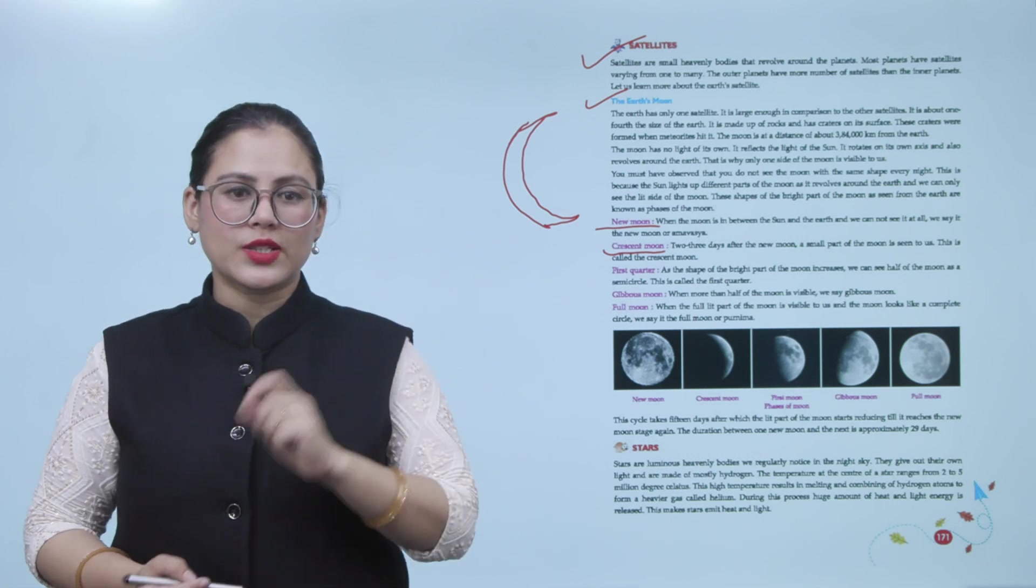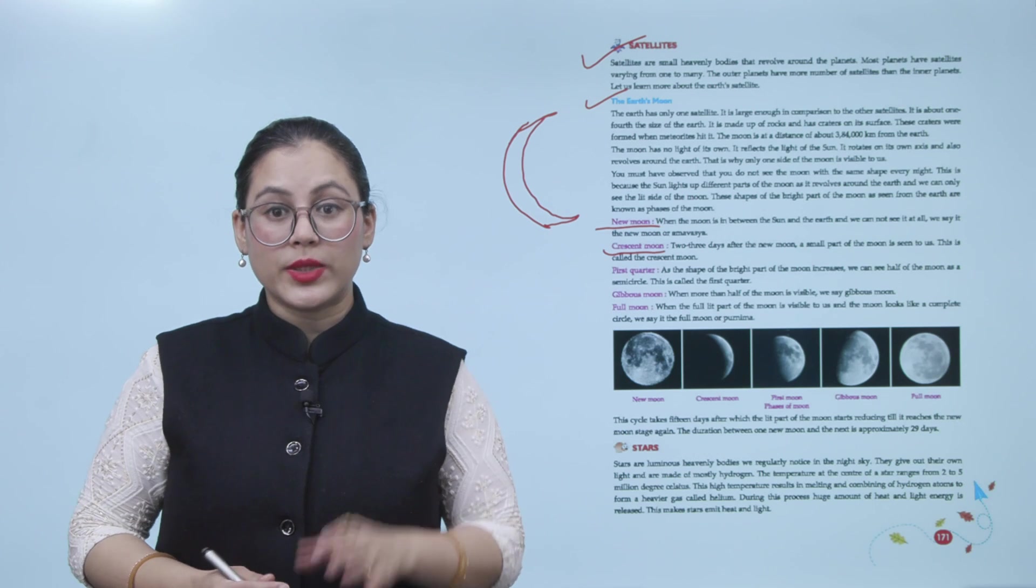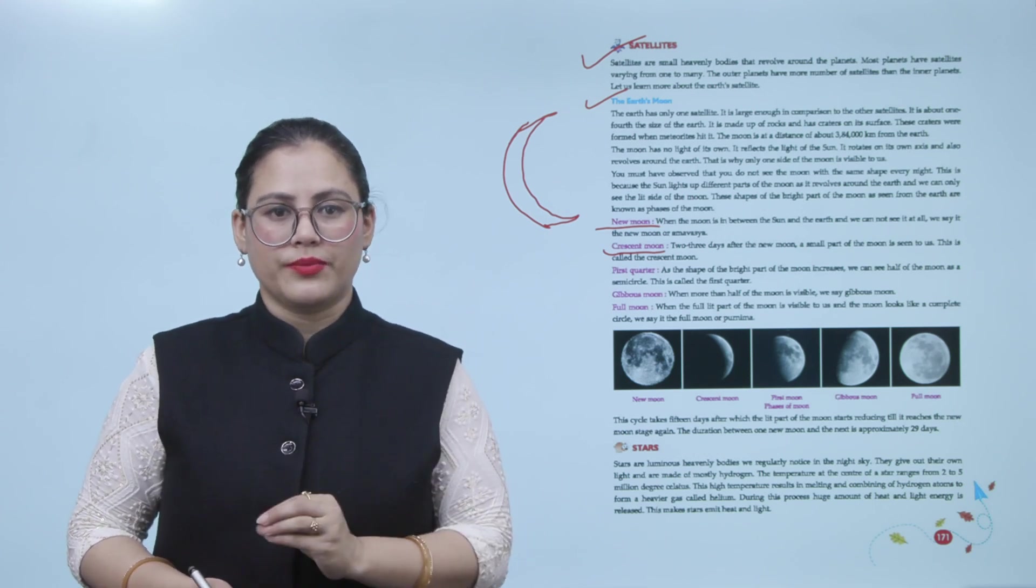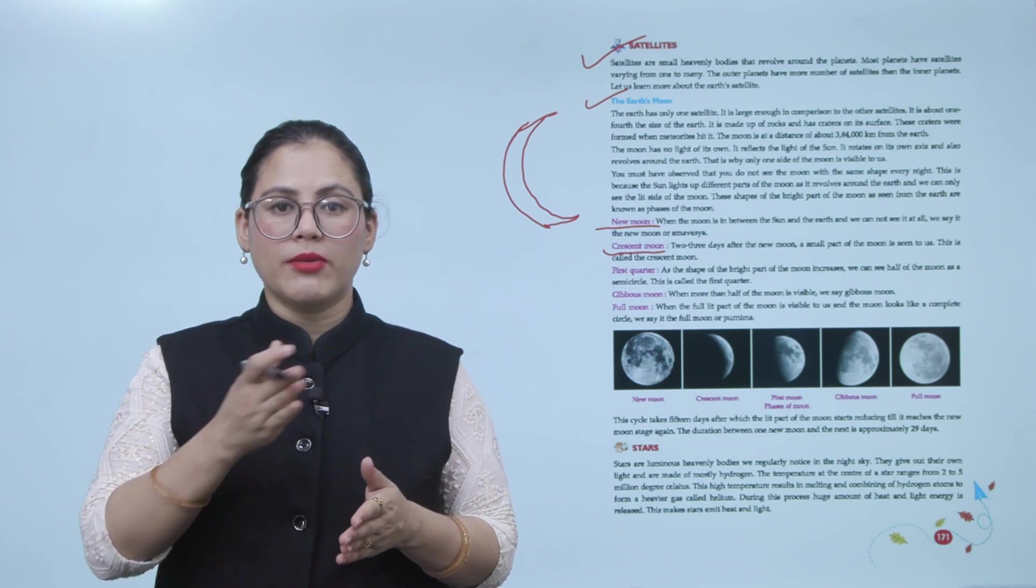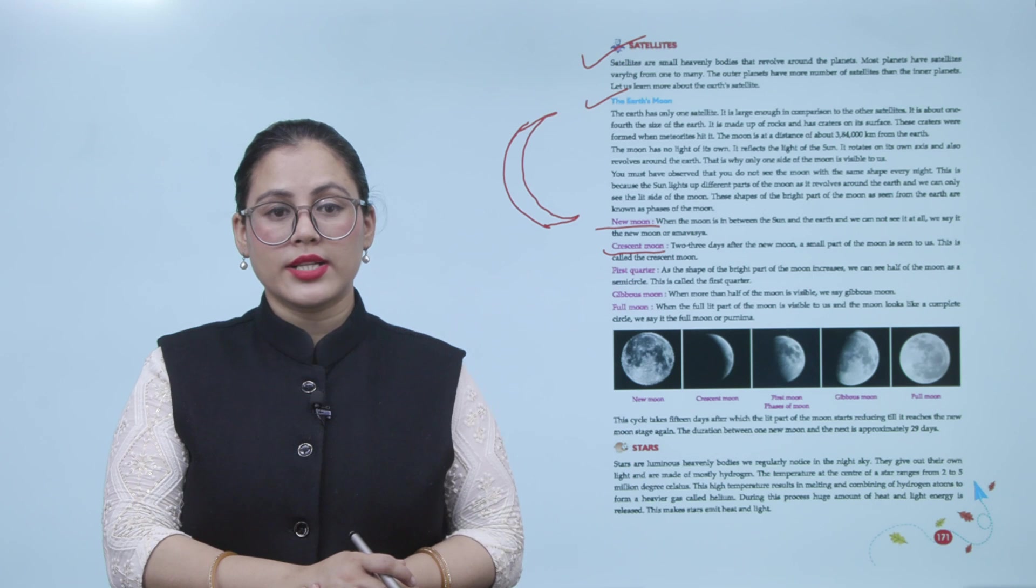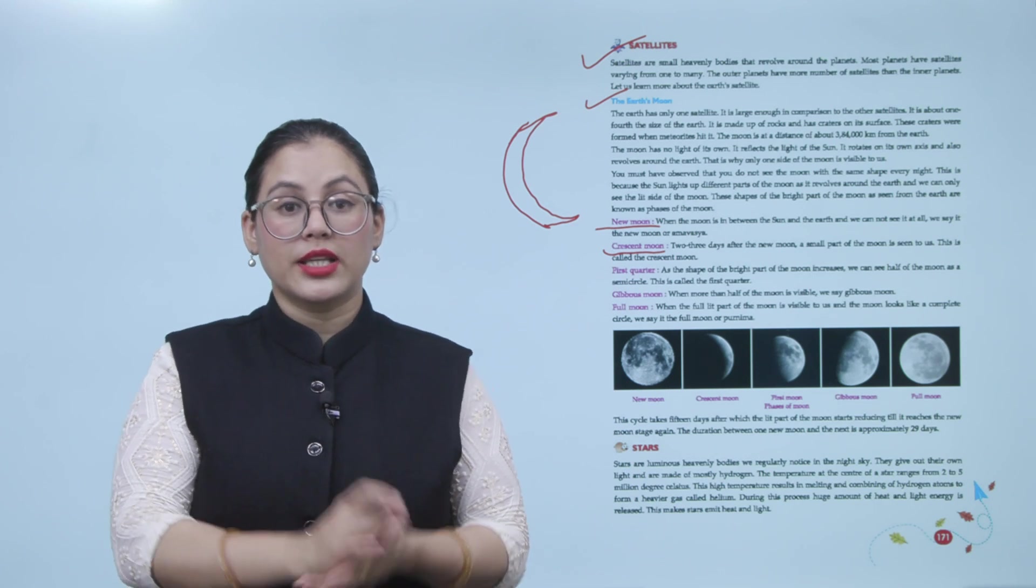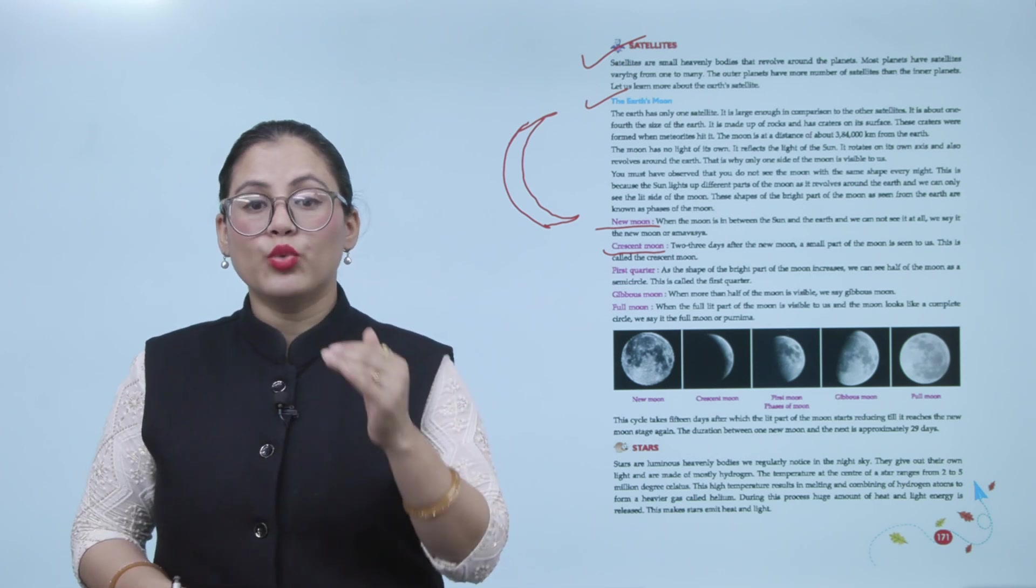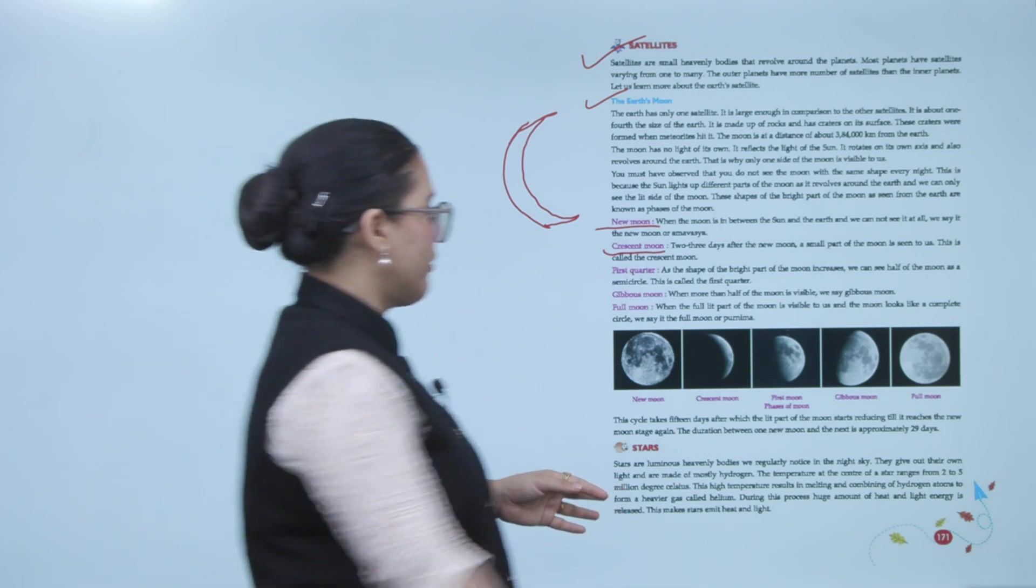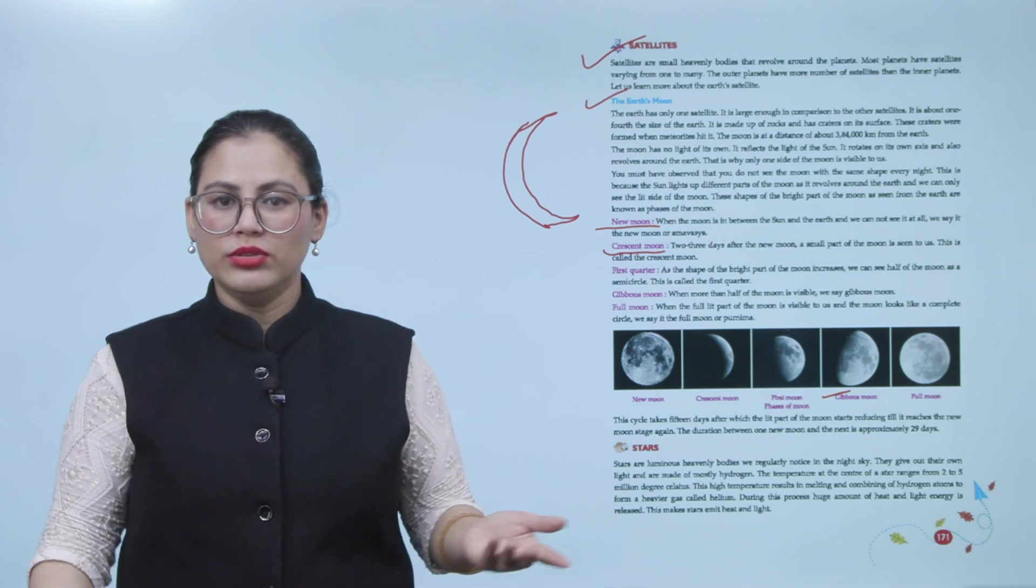First quarter. As the shape of the bright part of the moon increases, we can see half of the moon as a semi-circle. This is called the first quarter. Then, gibbous moon. When more than half of the moon is visible, we say gibbous moon.